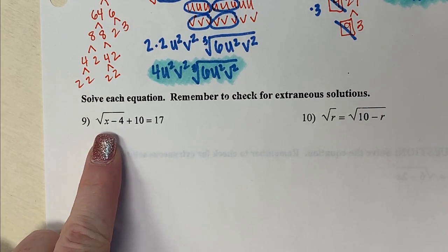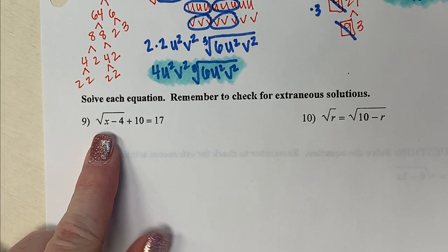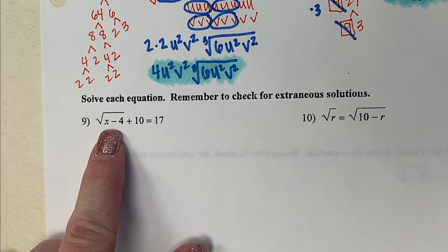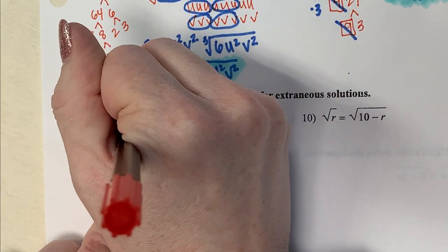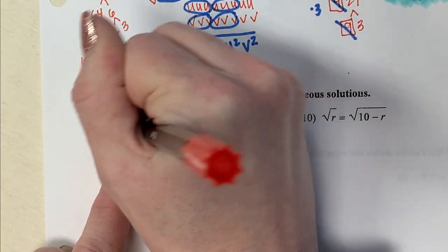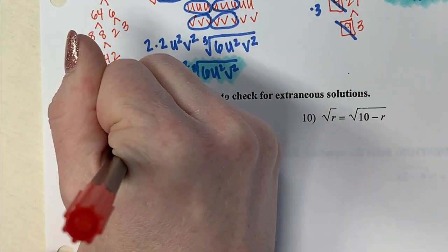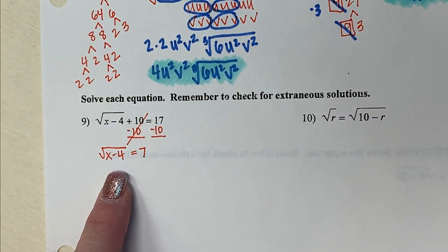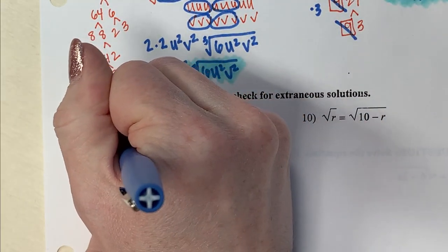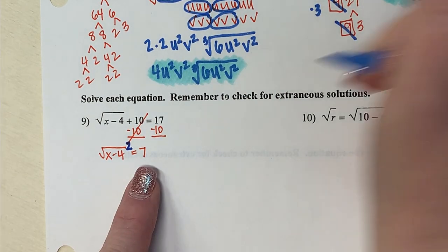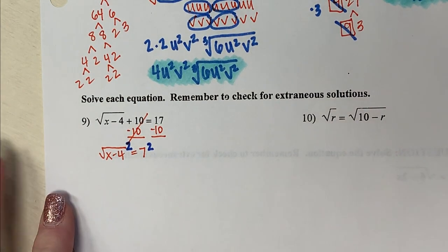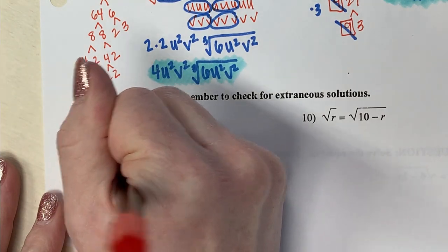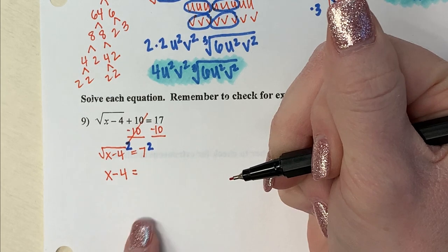I have four steps for solving these. Step one: isolate the radical. Here I have the square root of (x − 4) plus 10. I need to move that plus 10 — subtract 10 from both sides — so I now have the square root of (x − 4) equals 7. The radical is isolated. Step two: since this is a square root, I square both sides. The radical disappears and I get x − 4 = 49. A common mistake on the quiz was squaring the radical side but forgetting to square the other side, leaving it as 7 instead of 49.